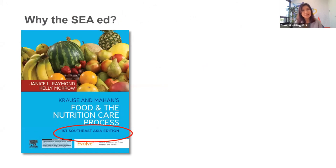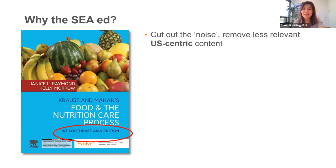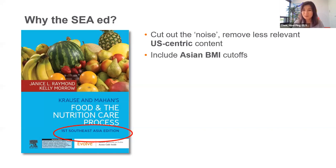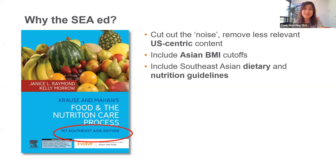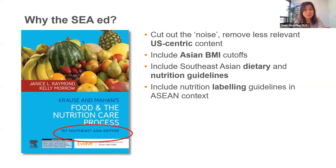So why do we need a Southeast Asia edition? As you know, Krause and Mahan is authored by faculty in the United States, so there is quite a number of US-centric content that might not be relevant in our region. We also have different BMI cutoffs from the Western population, as well as different dietary habits, and hence a different set of guidelines applies to us. In ASEAN, we follow the Codex labeling guidelines, not the FDA.